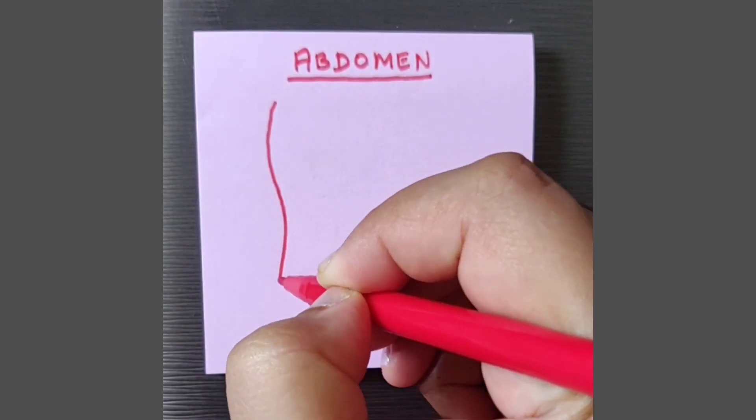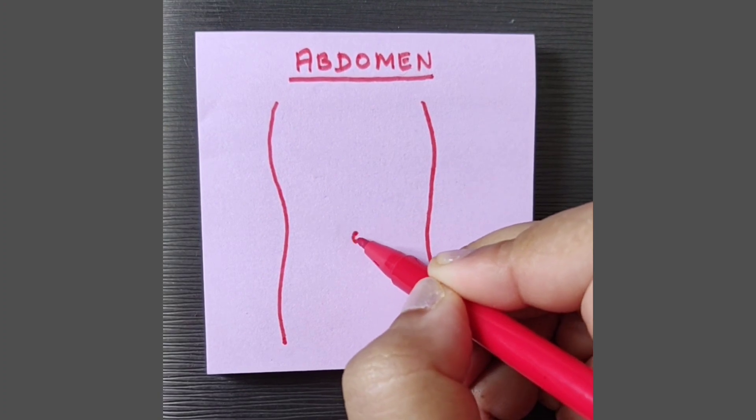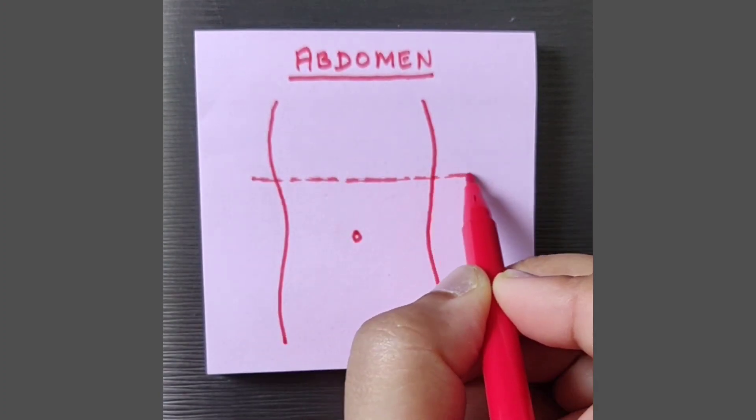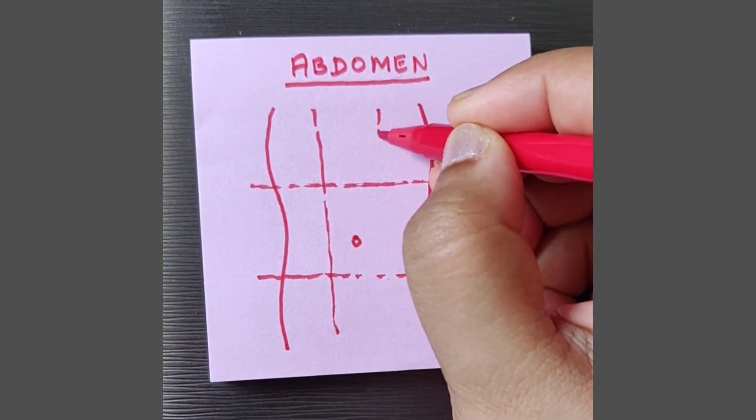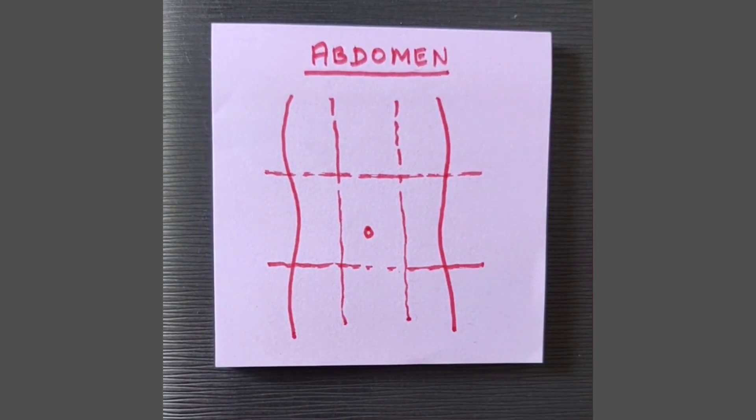Now I'm going to draw a schematic representation of the nine regions of abdomen. There you go, the umbilicus. Here we have the transpyloric plane. Here we have the trans tubercular plane. Then we have the right vertical plane and the left vertical plane. So there forms your nine regions.